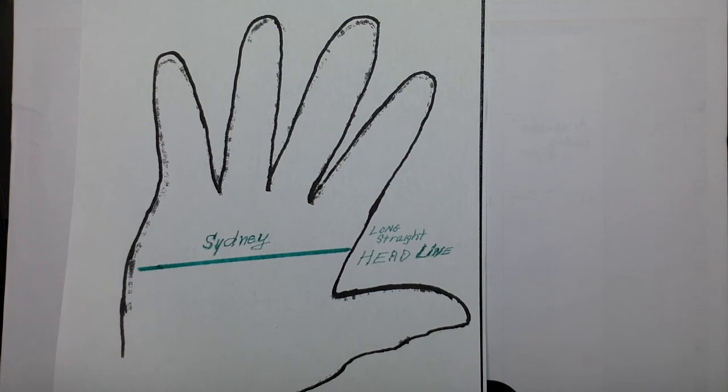Here is a long straight line that indicates a concentrated thinker who is logical, rational, and to the point. The people that have the Sydney line in their palms are blunt, unsympathetic, unsentimental, detached emotionally, and will follow the facts.